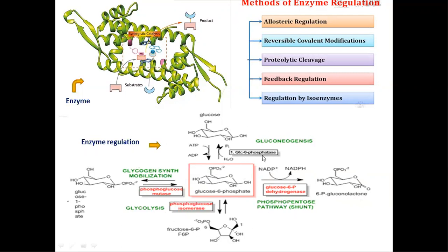For example, glucose-6-phosphate is a regulatory enzyme which controls the gluconeogenesis pathway. Glucose-6-phosphate dehydrogenase is another regulatory enzyme which controls the phosphopentose pathway, also called the HMP pathway. Phosphoglucose isomerase controls the glycolysis pathway, and finally phosphoglucose mutase is regulating glycogen synthesis.